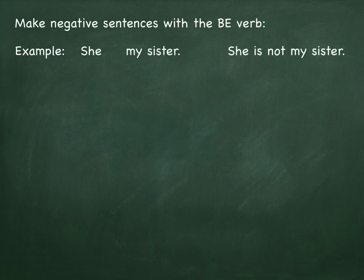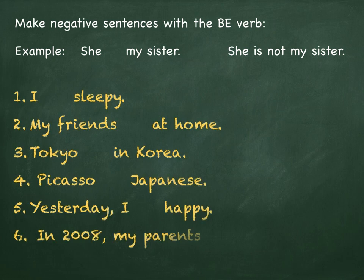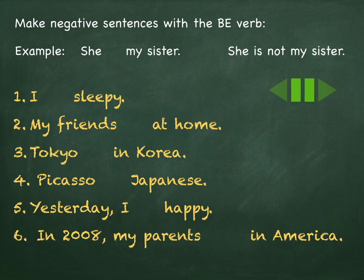Please look at these sentences and put the negative form of the be verb in the spaces. It's best to pause the video so that you have time to change the sentences in your mind, or if you want, you can write them on paper. Then I'll give the answers.